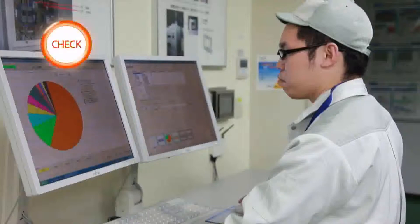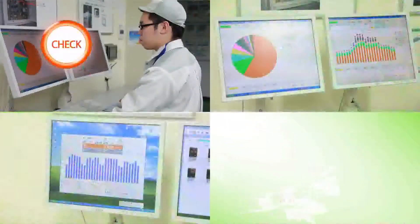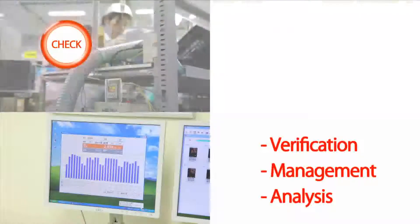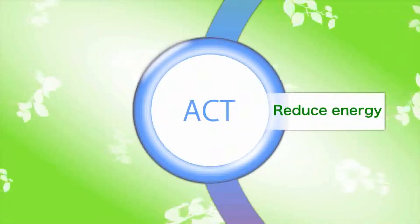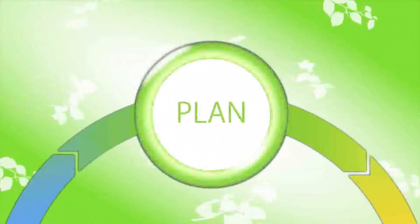C is for Check — you make an analysis utilizing tools and software you can download for free, and you are able to see the wasted part. A is for Action — you take steps for improvements on where you see wasting or inefficiency. And again, with tools and software, you check the result and go on to the next plans.